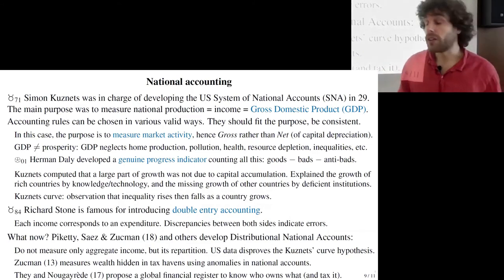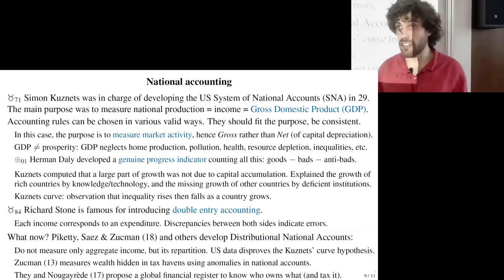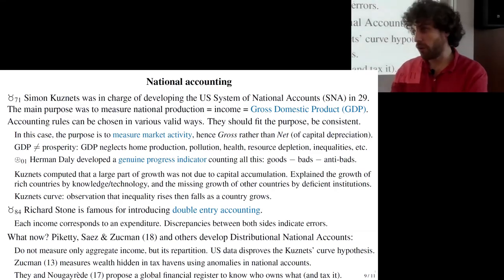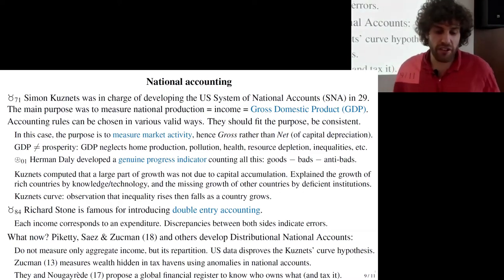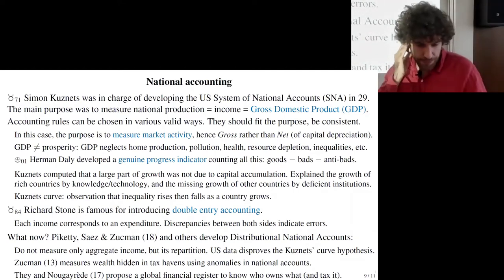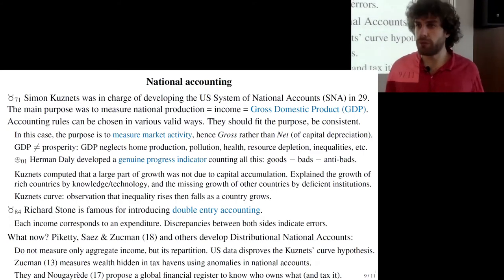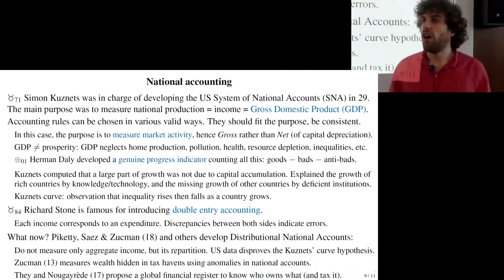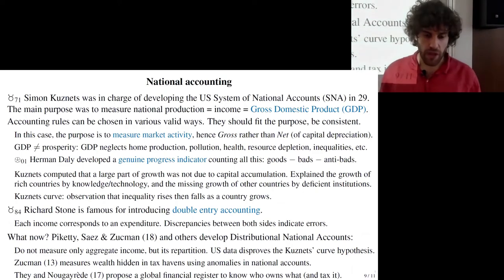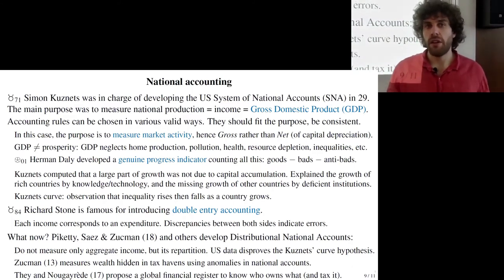Kuznets himself welcomed the ecological economics endeavor, as he was critical of the limitations of the national accounts system. He not only invented the accounting rules but also collected the first sets of national accounts data. He observed that a large part of growth was not due to capital accumulation and savings, and thus attributed this growth to knowledge and technology. This worked for rich countries, but in low-income countries there hadn't been such high growth despite knowledge being theoretically accessible to all.